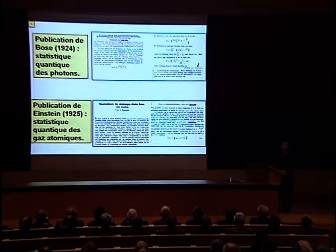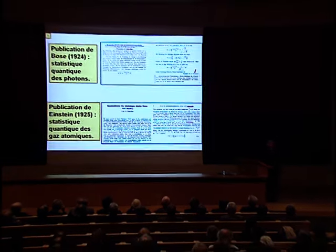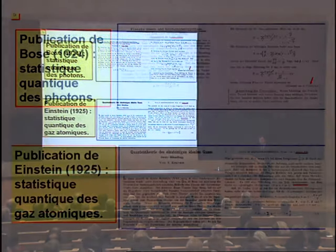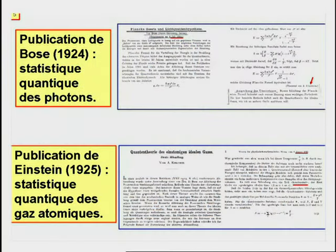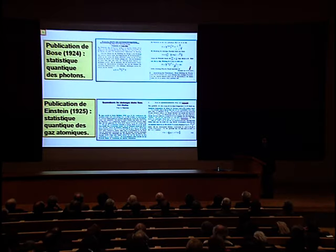En 1924 et 1925, deux articles historiques furent publiés dans deux revues allemandes. Ces deux publications fixent le début de l'histoire de la condensation de Bose-Einstein. On voit ici le papier de 1924 du physicien indien Bose sur la description statistique des photons, qui sont les quantas de la lumière. La note finale fut écrite par Einstein, qui était le rapporteur du papier.